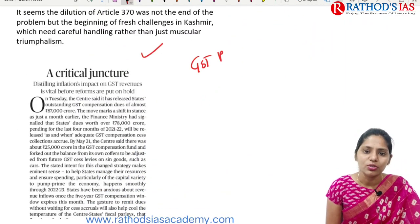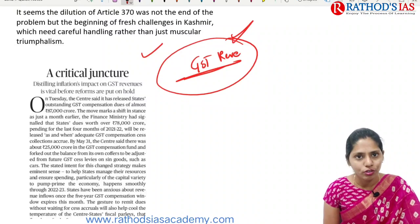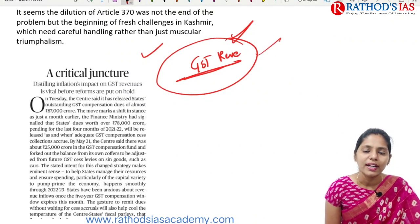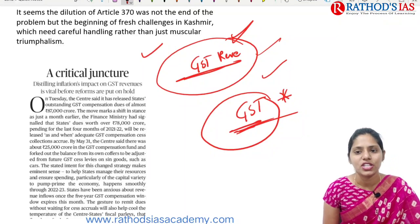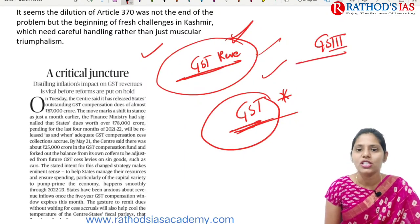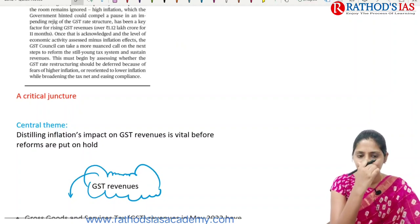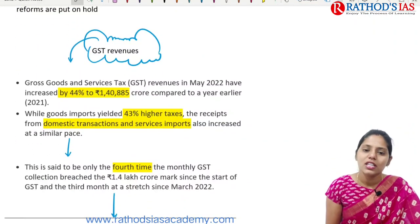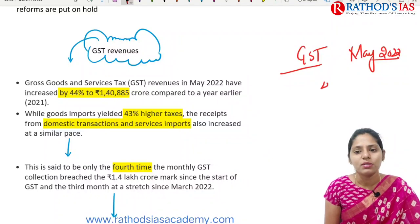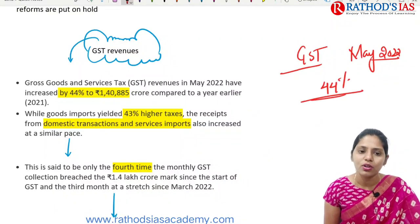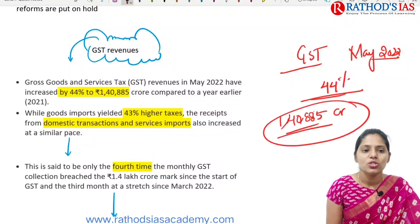Now let's see the next topic regarding GST revenues. This article is important for your GS Paper 3 under economy. The context here is that GST — Goods and Services Tax — revenues in the month of May 2022 have increased by 44%, amounting to about ₹1,40,885 crore.